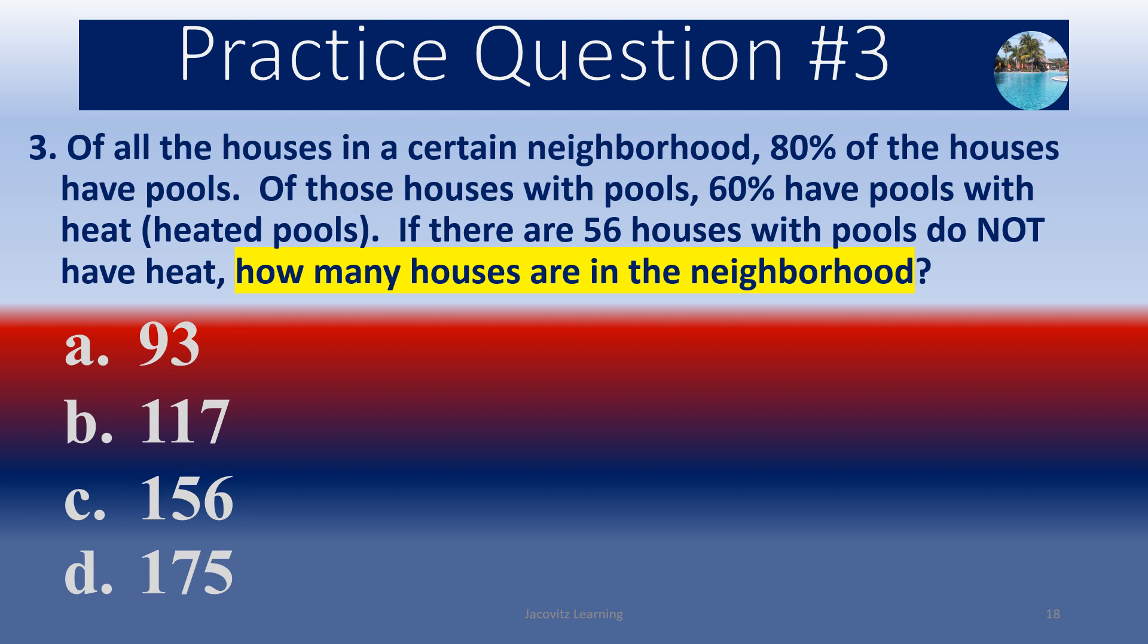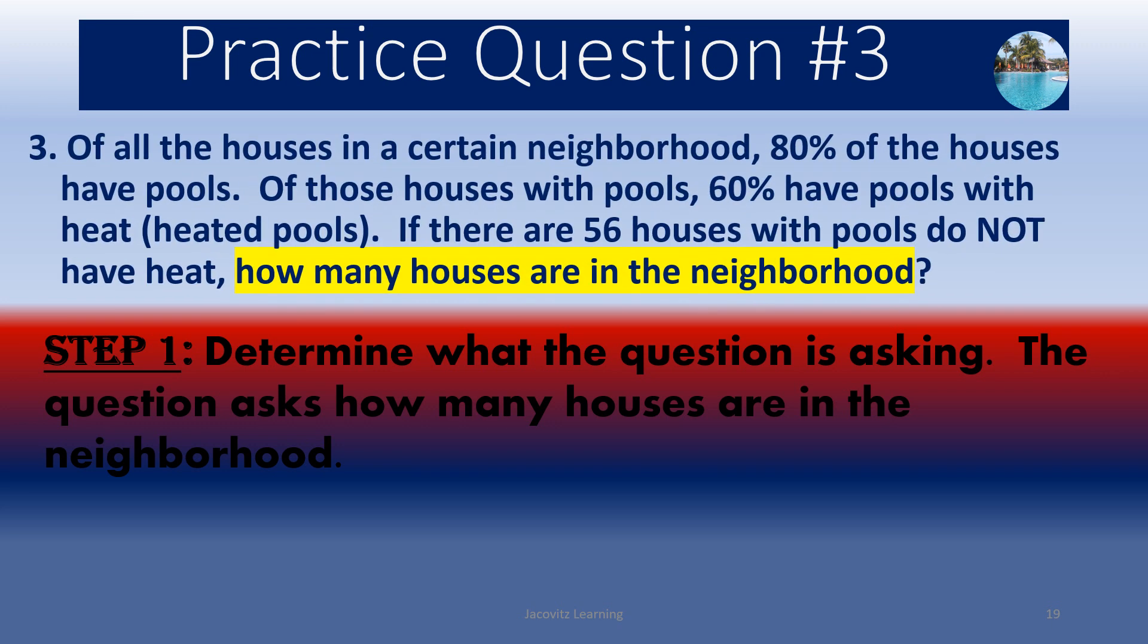Of the houses with pools, 60% have pools with heat, which means that 40% are without. So don't look at the numbers yet or your choices yet because that will only confuse you. So step one was determine what the question is asking. The question is asking how many houses are in the neighborhood total. So they kind of lead you to this pool question, and then they want to say how many houses? Because you already know it's 20% of the houses that don't have pools. But they want to know total number of houses just based on this limited amount of information. So make sure you're not going for houses with pools or houses with heated pools because they are trying to distract you. And when they take that number 56 and throw that in and say if there are 56 houses with pools that do not have heat, they're trying to throw you. So just try to keep everything contained here.